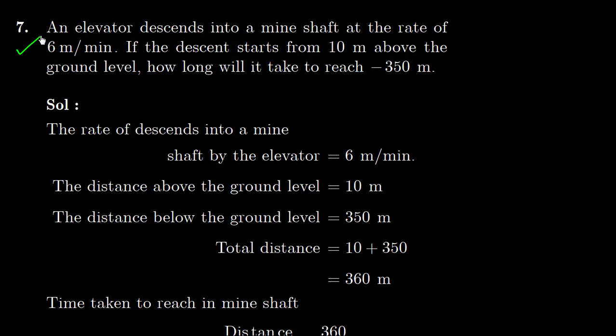Question No. 7. An elevator descends into a mine shaft at the rate of 6 m per minute. If the descent starts from 10 m above the ground level, how long will it take to reach minus 350 m?